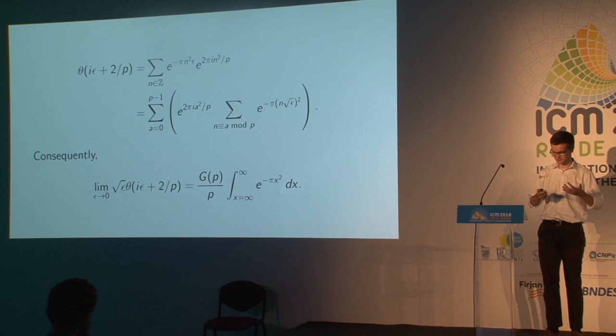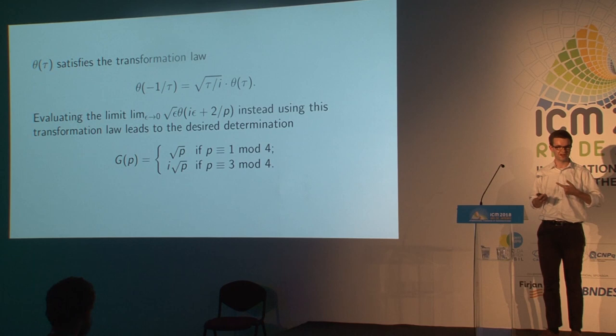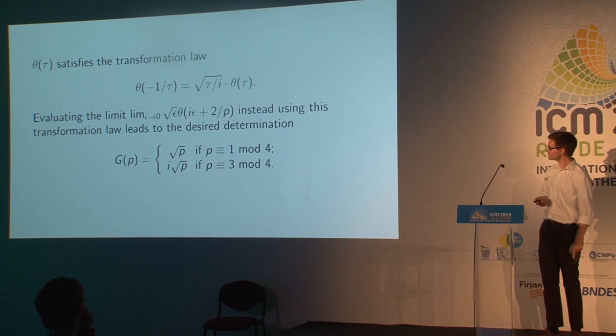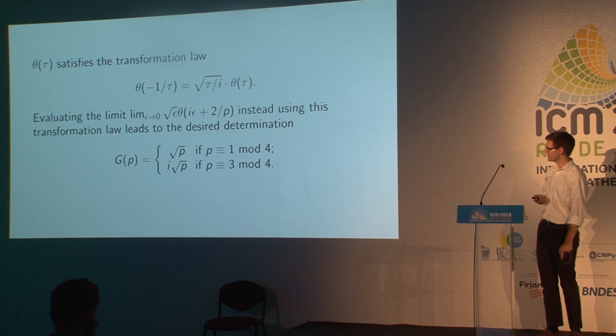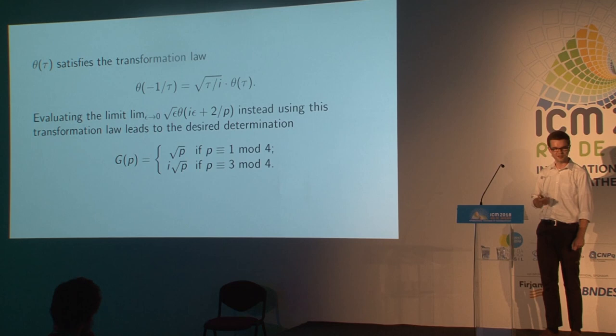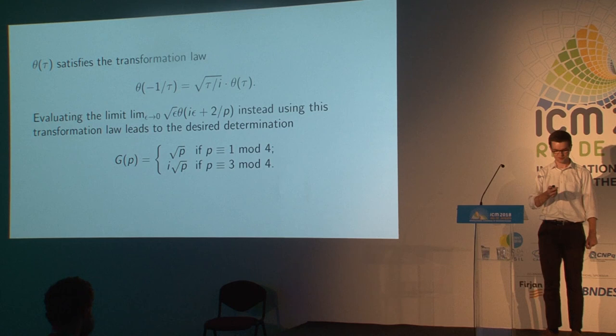This theta function is an automorphic form. That means it satisfies some kind of invariance property under an arithmetic group — in this case, some finite-index subgroup of SL₂(ℤ). The fundamental relation you need is what happens to theta when you act on it by the Möbius transformation corresponding to the matrix (0, 1, -1, 0). If you evaluate this limit in a different way by first applying that relation and then doing the same trick with the series, you quickly find that the Gauss sum g(p) is +√p if p ≡ 1 mod 4, and i·√p if p ≡ 3 mod 4. That was what Gauss conjectured at the time of the Disquisitiones but only proved a few years later. And that's a proof of quadratic reciprocity.